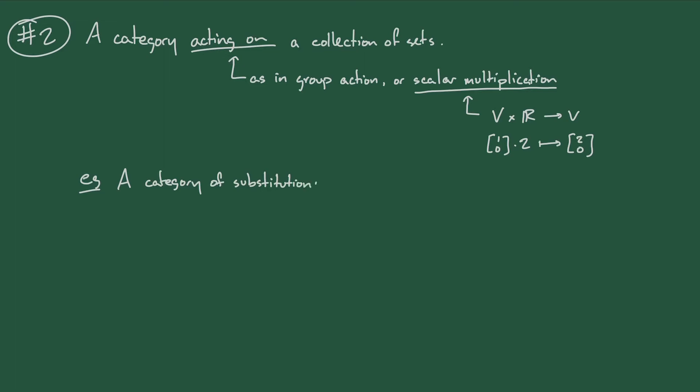Now, there are a lot of situations where it's natural to think of a category acting on a bunch of sets. In type theory, the analog of this that comes up a lot is that we have a category of substitutions that are acting on collections of terms. So here the substitutions are like the real numbers, and the terms are kind of like the vectors. Suppose we have a typing judgment that in context gamma, M is a term of type bool.